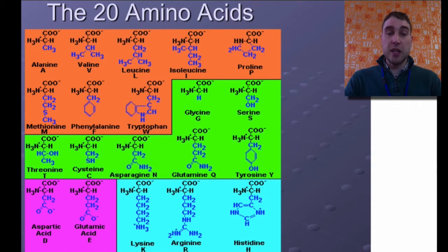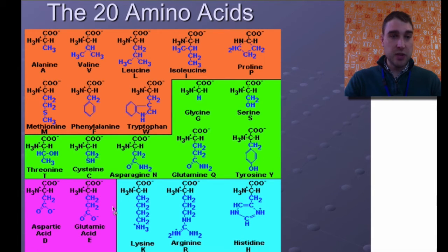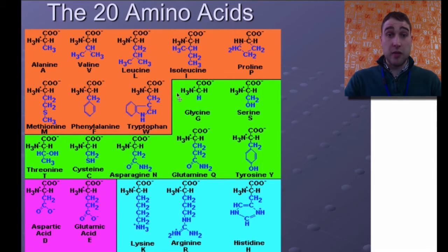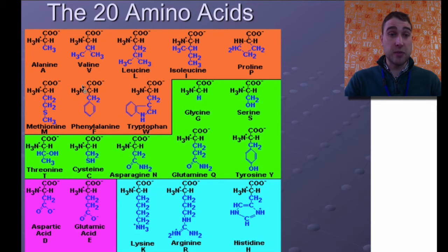Here are the 20 amino acids that we use. You can see they have many different variations on the carbon chain that comes off the side chain. We have really simple ones — you have glycine, which is just a hydrogen. You have really complicated ones, like phenylalanine, which has a benzene ring, and tryptophan, which has a whole big structure coming off.